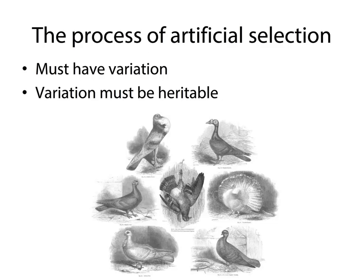Darwin worked with pigeons when developing the idea of natural selection — he noticed that breeders could select for certain traits. In order for artificial selection to work, you have to have variation — if everybody's identical, there's nothing to select for or against. That variation must also be heritable, meaning it gets passed on from one generation to the next. So to artificially select for traits, you need genetic variation and that variation has to be heritable.